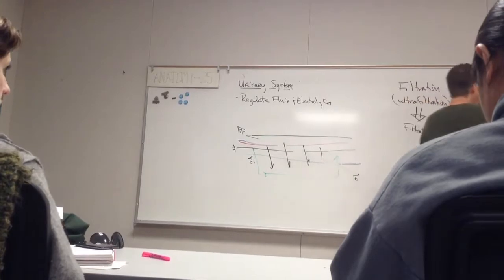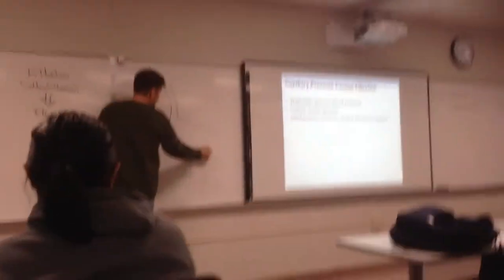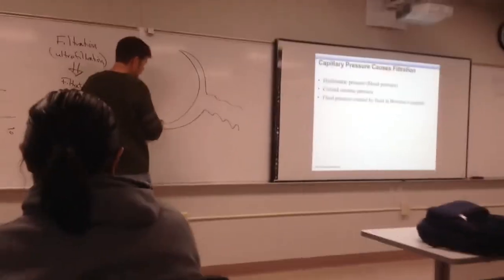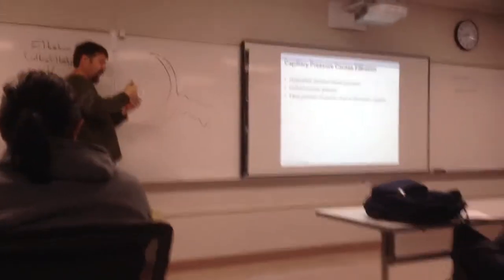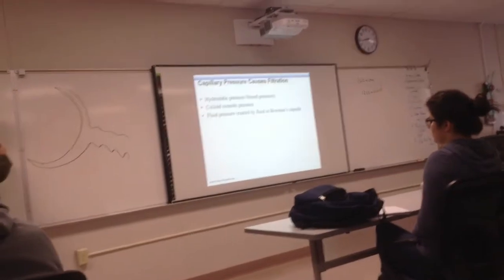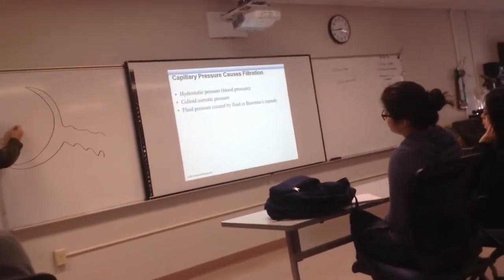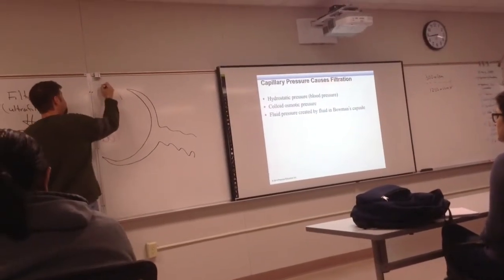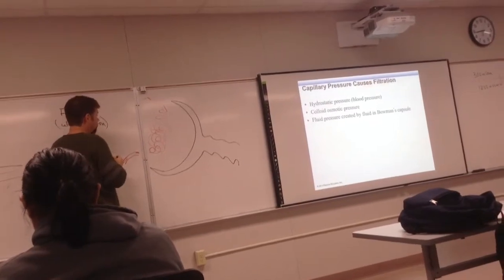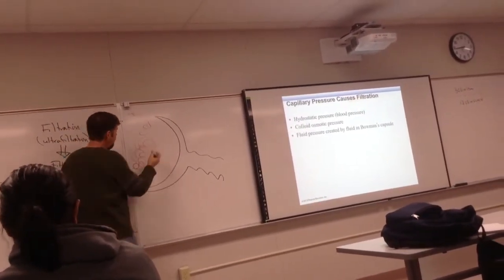Now that can't be the end of the story though. That filtrate that we're producing can't disperse. It's getting collected by this funnel, by Bowman's capsule. So here we have an afferent arteriole coming in, we have the glomerular capillary bed here, we have an afferent arteriole going out here. So that's our direction.